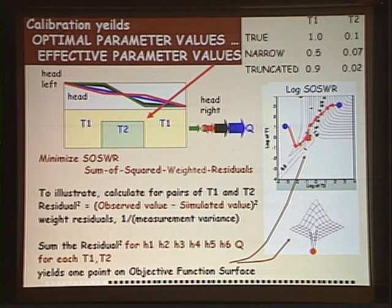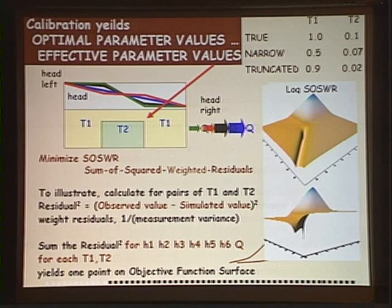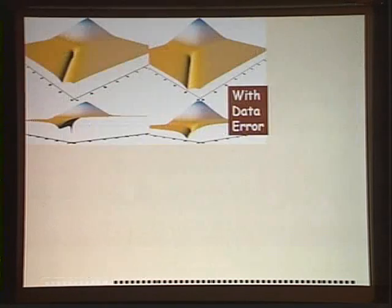Let me show you this sum of squared weighted residual surface as an oblique view. If our data has error associated with it, then this distinct minimum starts to disappear. As a matter of fact, this surface may become so flat that many parameter values essentially give you the same fit to the data.